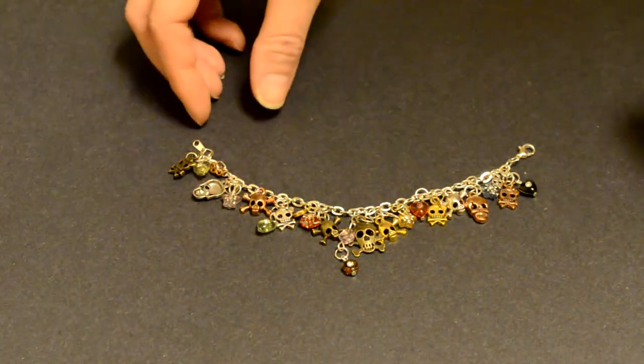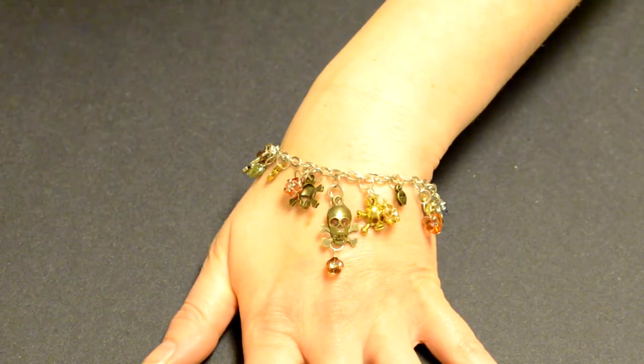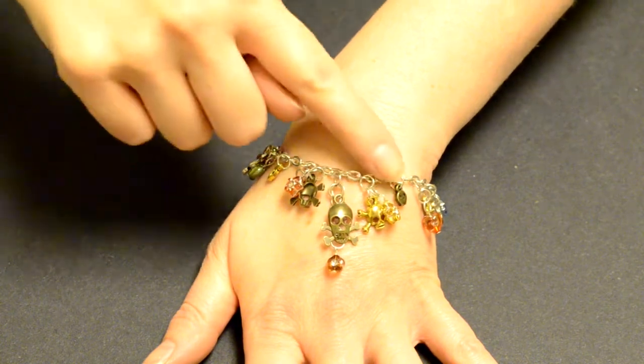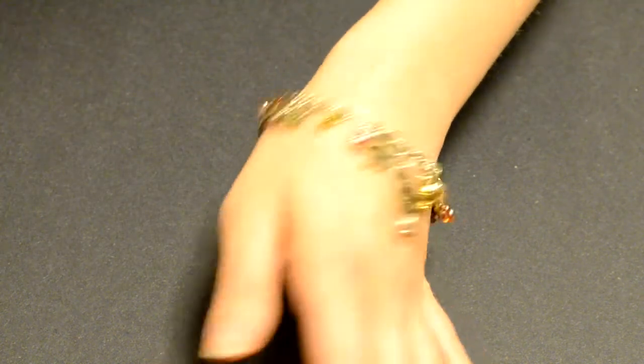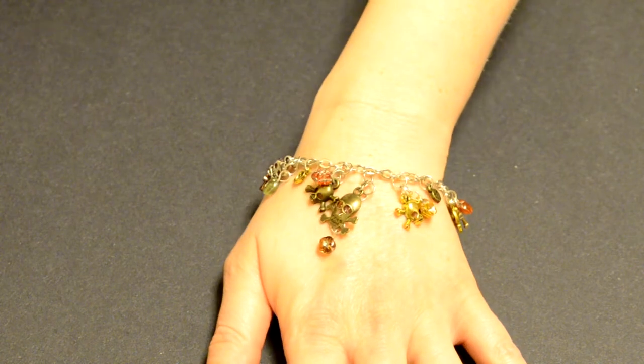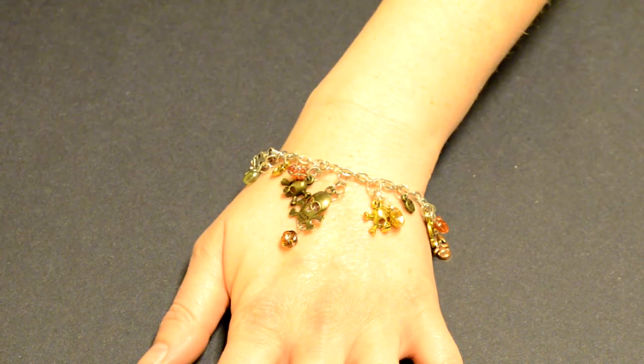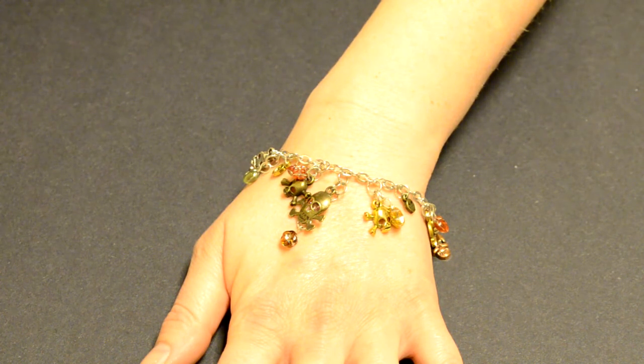Here's our final project on the wrist. As you can see, the middle is the most extravagant, and we have our clasp in the back. It dangles very nicely. Thank you for tuning in, and I hope that you tune in again next time for more jewelry tutorials.